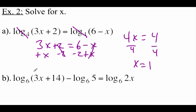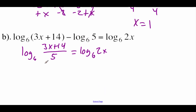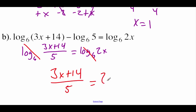With the next example, log base 6 of (3x plus 14) minus log base 6 of 5 equals log base 6 of 2x. Can't use the one-to-one property yet, since there's two logarithms on the left-hand side, but we can condense those things down using that quotient property in reverse. So we end up with log base 6 of (3x plus 14) all over 5, equals log base 6 of 2x. Now that we've got just a single base 6 logarithm on both sides, let's use our one-to-one property to cross those things off: (3x plus 14) over 5 equals 2x.